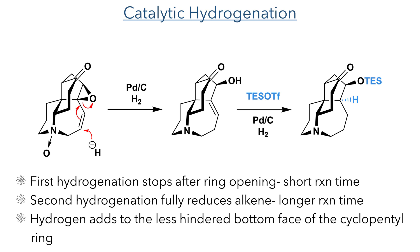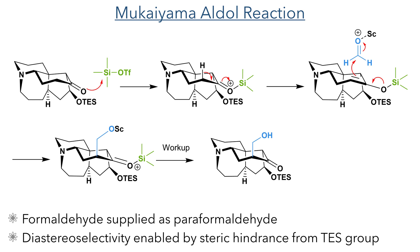In order to install a primary alcohol, the authors used a Mukaiyama-Aldol reaction. Reaction of the carbonyl group with TMS triflate produced a silyl enol ether, which is able to act as a nucleophile. It added to the formaldehyde electrophile, which was produced from paraformaldehyde in reaction with scandium triflate. The TMS group is cleaved upon aqueous workup to restore the carbonyl group with the newly formed hydroxymethyl group at the alpha position.